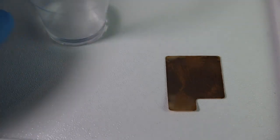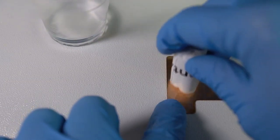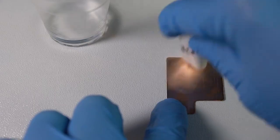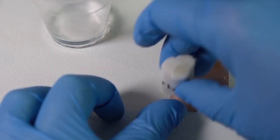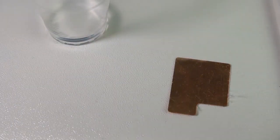Wet an absorbent with hydrochloric acid taken from the reagent pack. Remove the residues of copper oxide by wiping the copper plate with the wet absorbent, and then wipe it again with the dry side of the absorbent.